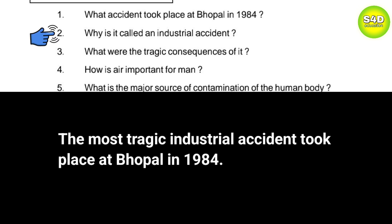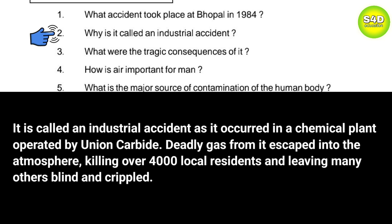Question 2: Why is it called an industrial accident? Answer: It is called an industrial accident as it occurred in a chemical plant operated by Union Carbide. Deadly gas from it escaped into the atmosphere, killing over 4000 local residents and leaving many others blind and crippled.